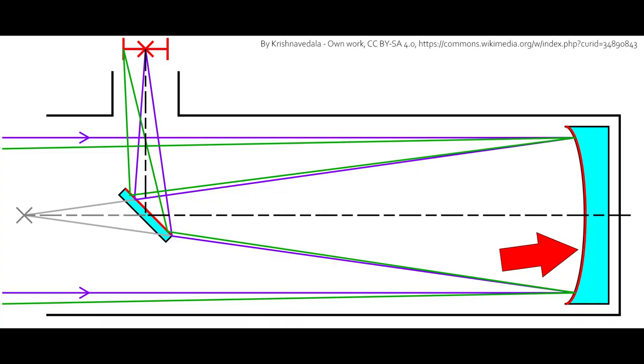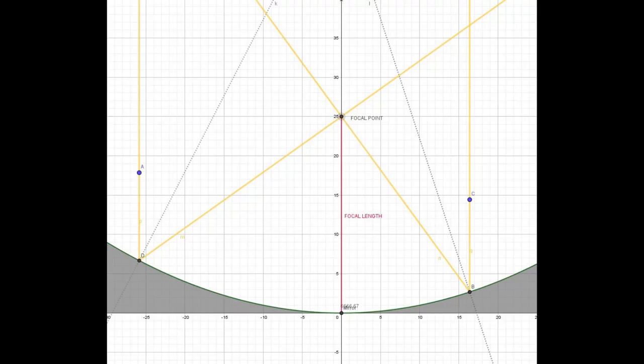And using a curved surface, mostly parabolic, they are able to concentrate all incoming light into one point. Again, this point is our focal point and the distance primary mirror focal point is our focal length.